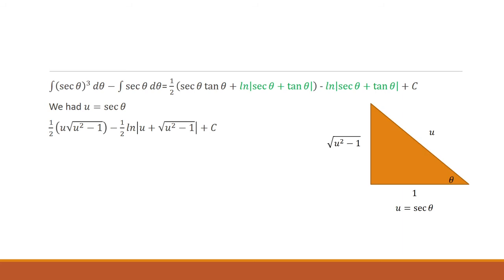Now I want to back-substitute. We had u equal secant theta, and from the right triangle, if u equals secant theta, then cosine theta is 1 over u — cosine is adjacent over hypotenuse, so I put 1 as the adjacent and u as the hypotenuse. By the Pythagorean theorem, the opposite side is the square root of u squared minus 1. So secant theta is u, and tangent theta — opposite over adjacent — is the square root of u squared minus 1. Substituting in, we get the ln of u plus square root of u squared minus 1, plus a constant.